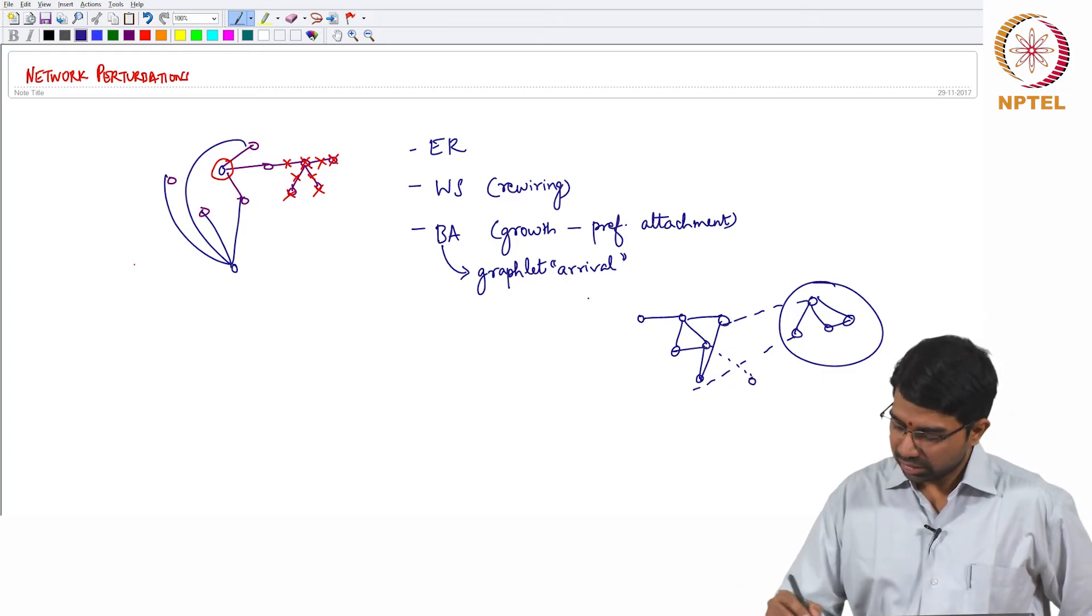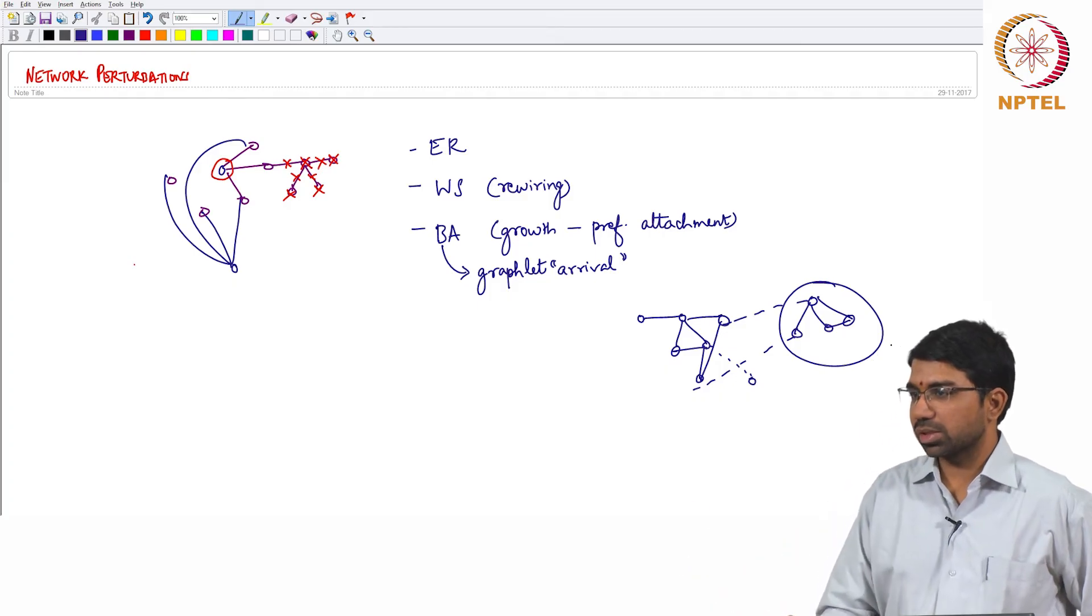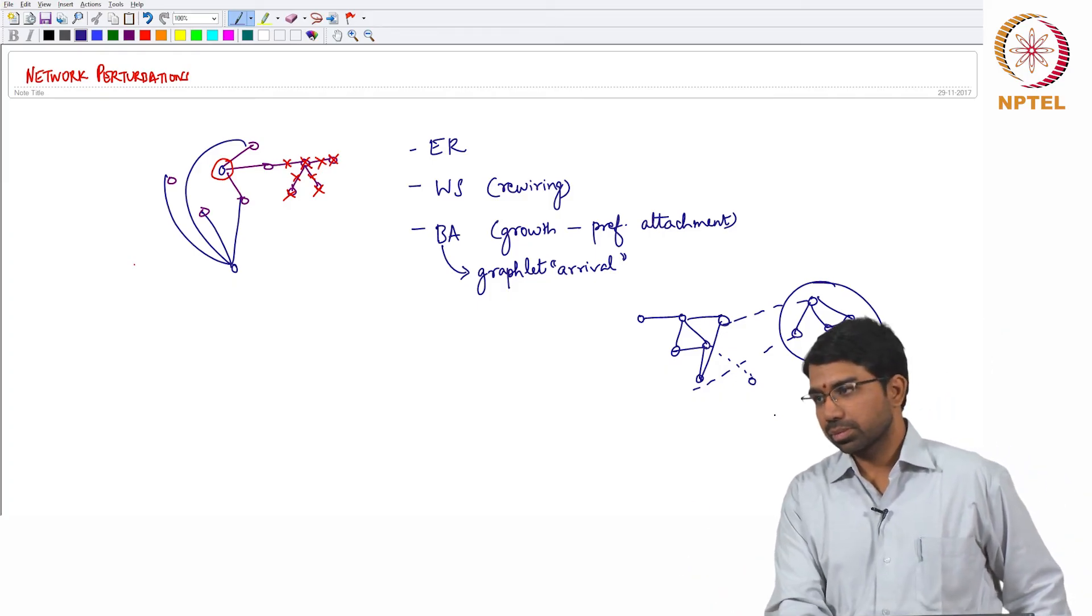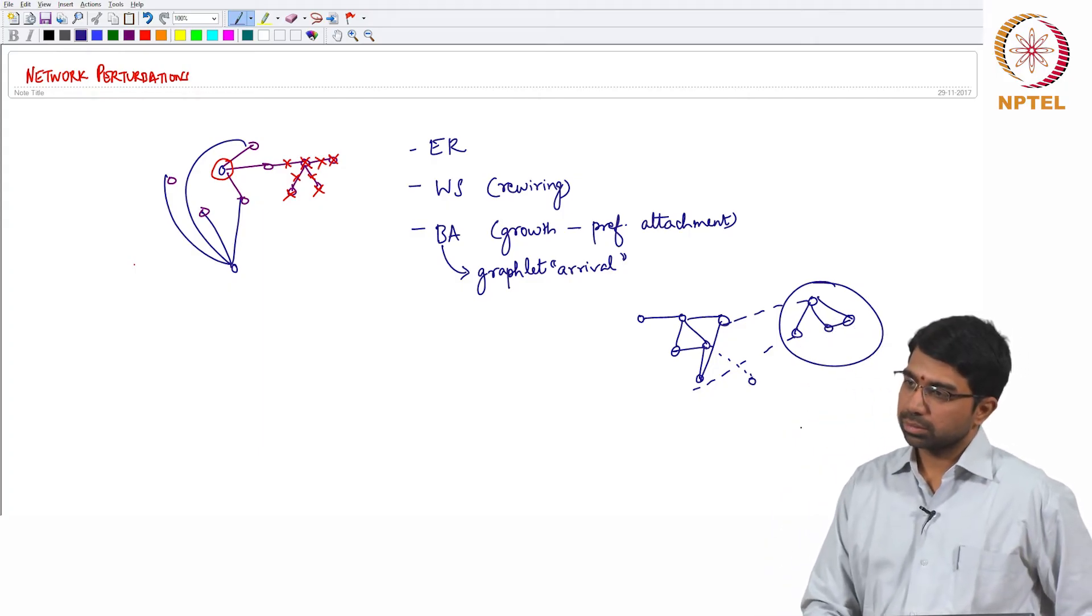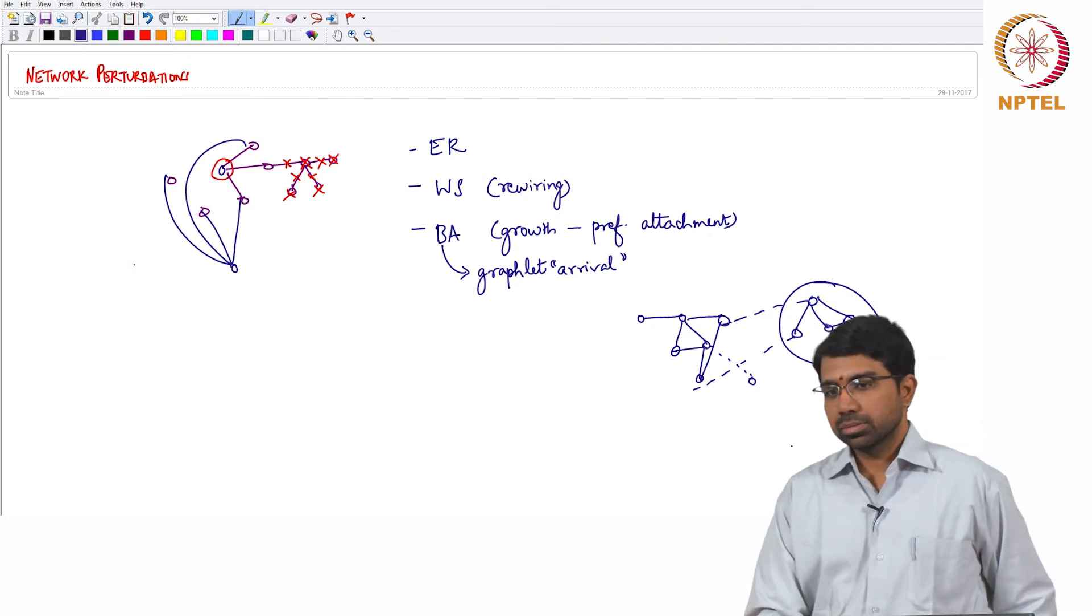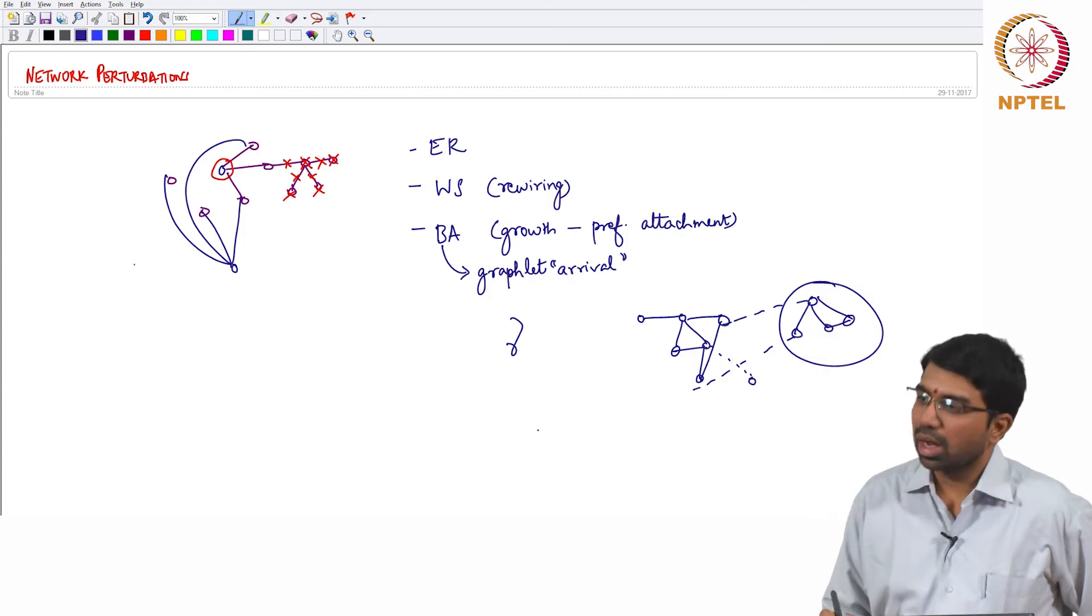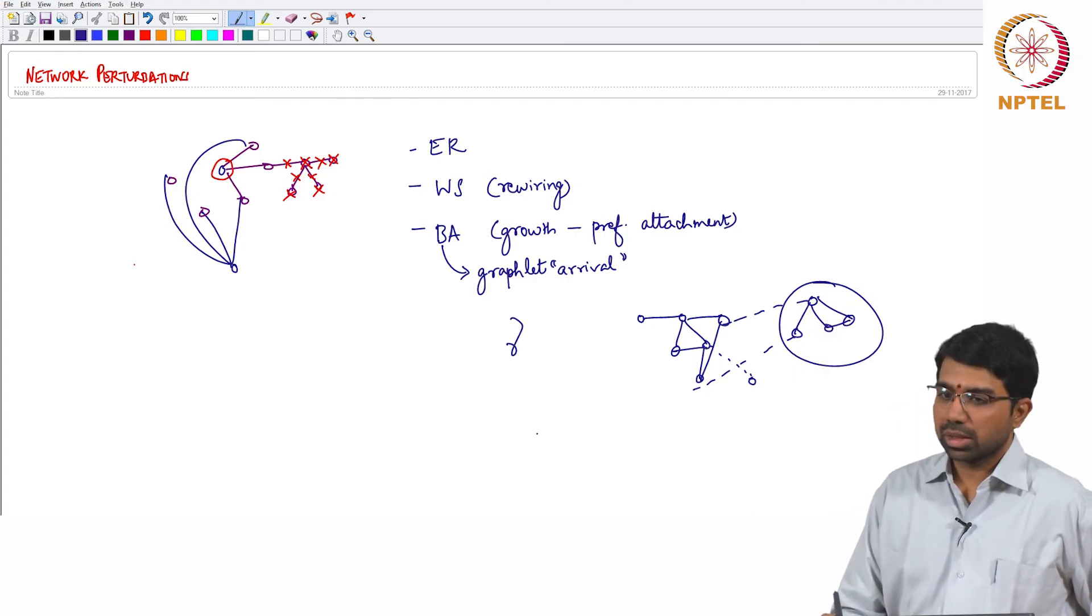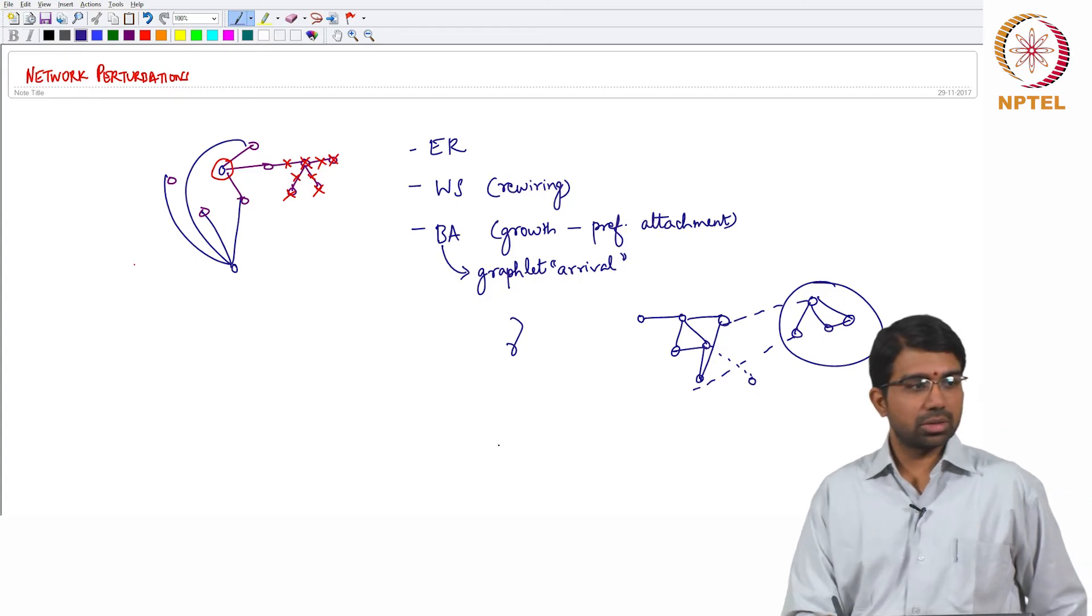And this is indeed a sort of perturbation to the network. The previous model also when one node comes it has only one edge. It can have more edges. That will change the gamma. If you keep adding one edge at a time I think you get gamma equals 2. You can just plot it and check it out.